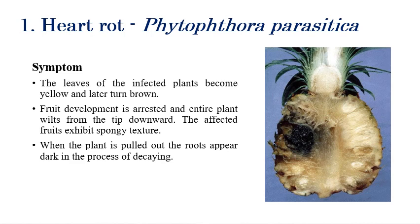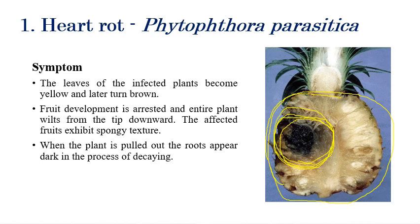The first disease is heart rot, caused by Phytophthora parasitica. Symptoms can be observed in both fruits and leaves. In fruits, we can see internal rotting — a black color rotting. The internal rotting of fruits can be clearly seen, and the affected fruit becomes spongy in appearance.